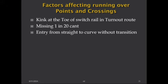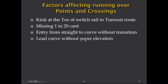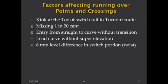Third factor: entry from straight to curve without transition. When a train negotiates the turnout side, it comes from straight track and suddenly takes the curve with no transition curve, which affects the running. Fourth factor: lead curve without super elevation — on the loop line side there is curvature but no super elevation, which slightly affects running on the loop line.